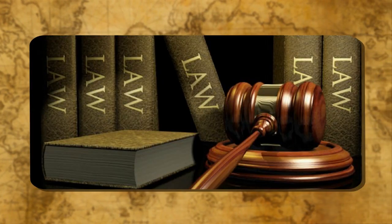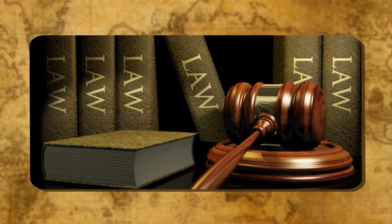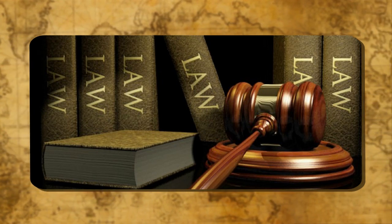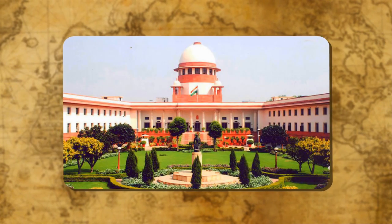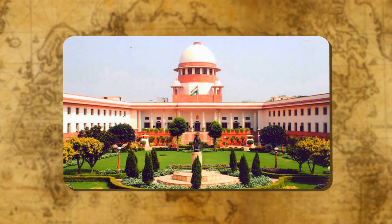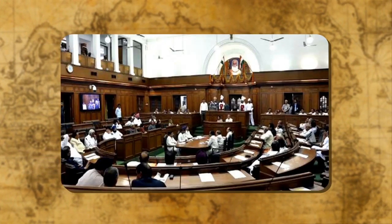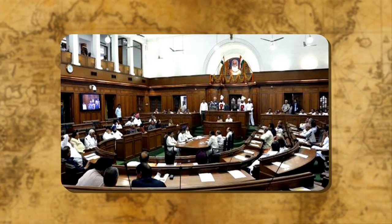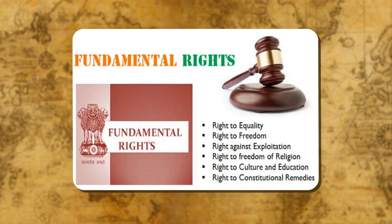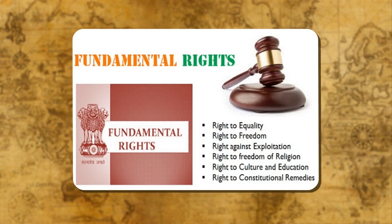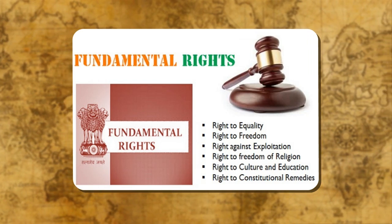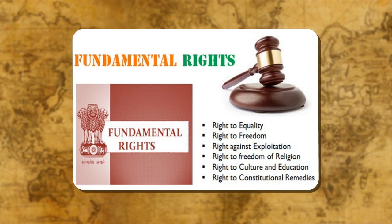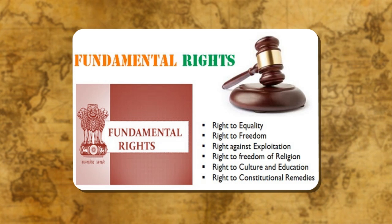The judicial functions: it examines whether laws are being obeyed or not and punishes those who break the laws. It has the sole power of interpreting the constitution. Its important function is to settle disputes among citizens and between citizens and the government. It protects the fundamental rights of the citizens, which are granted by the constitution against other individuals or the state. The President can seek its advice regarding the legal position of any matter.